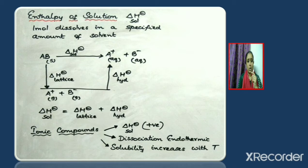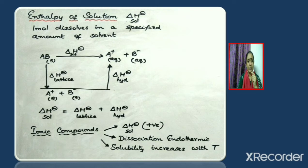The solid ionic compound first gets converted into its constituent gaseous ions, and these gaseous ions get hydrated to give A⁺(aq) and B⁻(aq). For ionic compounds, the enthalpy of solution is found to be positive. A positive sign shows that energy is absorbed during dissolution, which is why the dissolution process is taken as endothermic. Since dissolution is endothermic, solubility increases with increase in temperature.